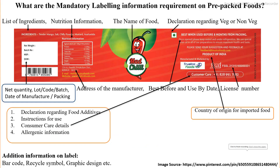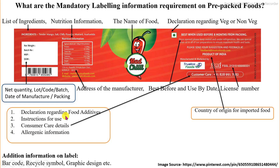What are the mandatory labeling requirements on pre-packed foods? The mandatory requirements on the label include: name of the product, specific name, list of ingredients, nutritional information, declaration of vegetarian or non-vegetarian, license number, country of origin, customer care number, best before and use by date, manufacturing date, lot number, net quantity, address of the manufacturer, declaration regarding food additives, instructions for use, and allergen information. These are the minimum requirements in food packaging labeling as per the Food Safety Standard Authority of India.